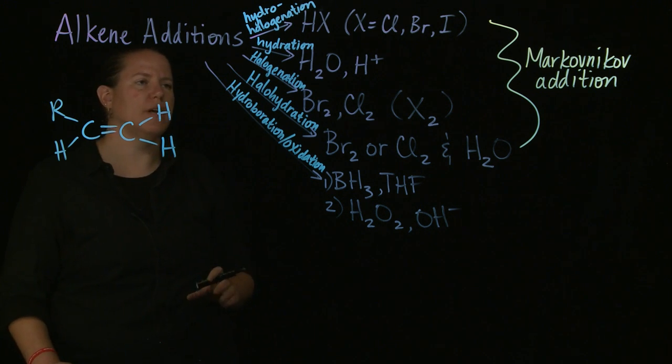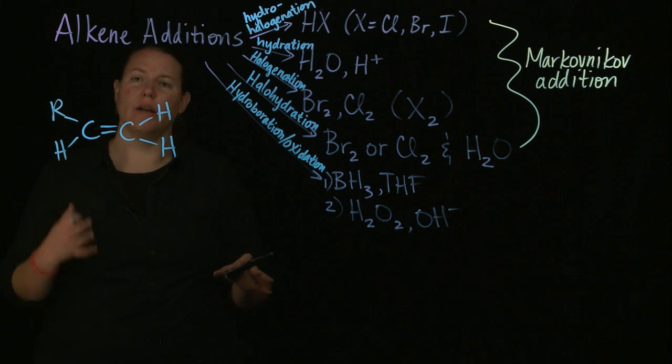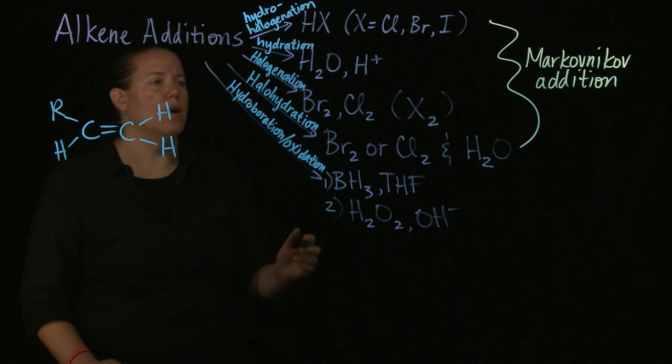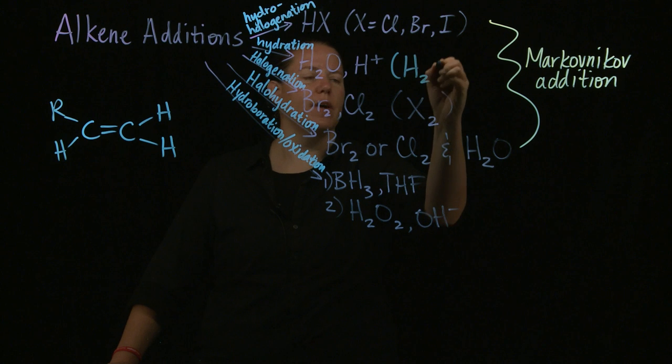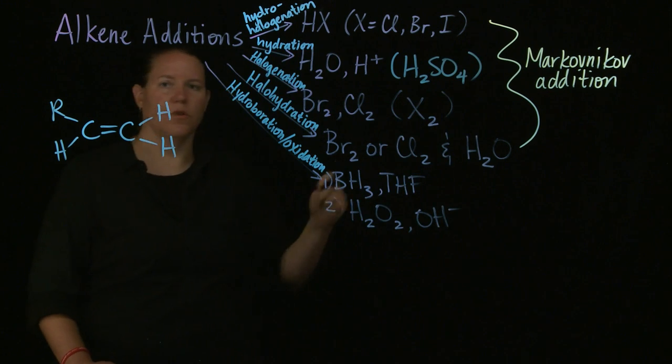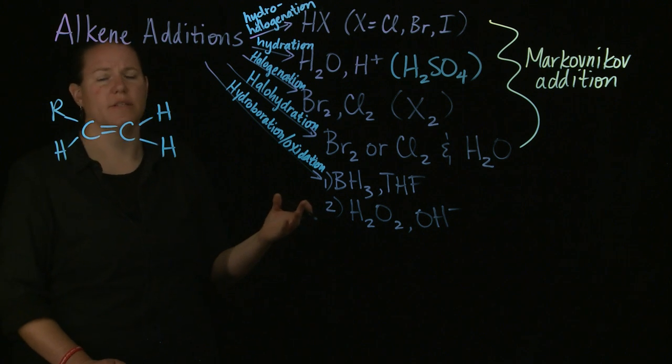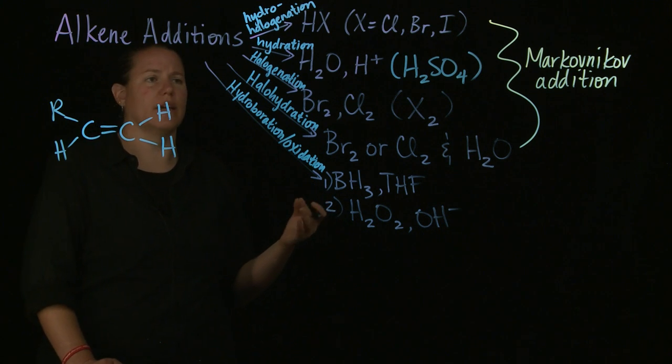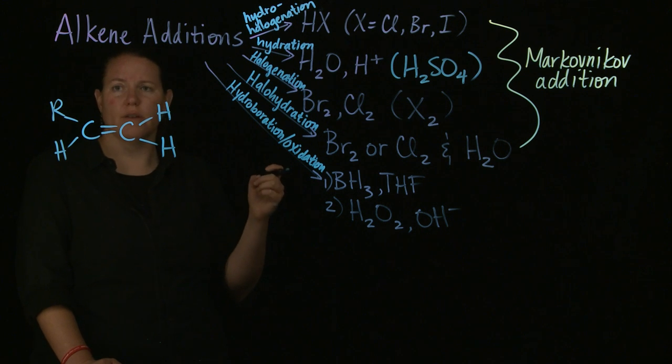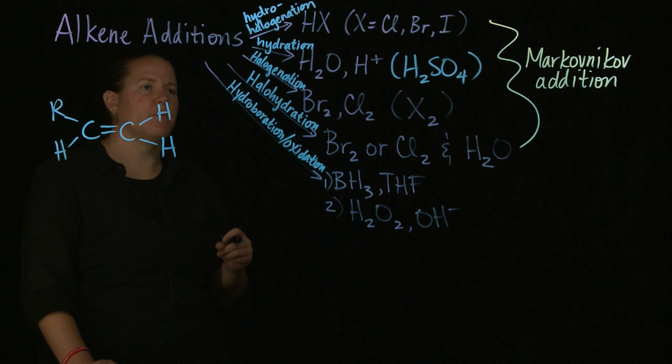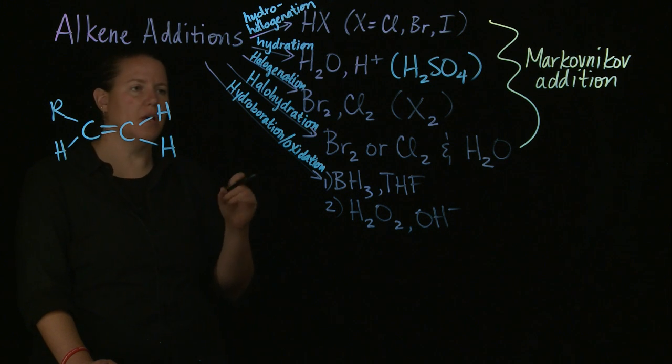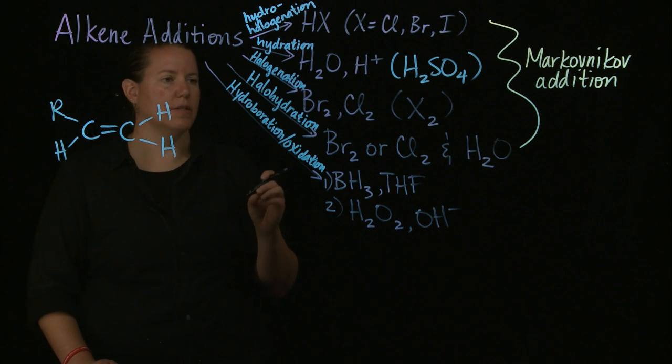Hydration reactions would have an addition of water. So you're going to add an alcohol to one side and an H to the other. They have to be done in the midst of an acid catalyst. The acid catalyst here for the vast majority of the time is sulfuric acid (H2SO4). Halogenation is adding Br2 to each side of the alkene or Cl2. You cannot use I here. It's too big.